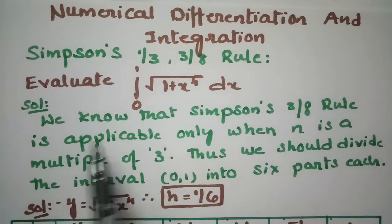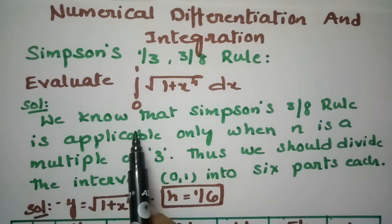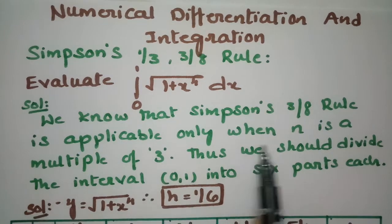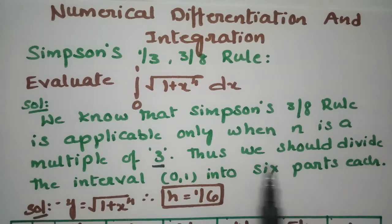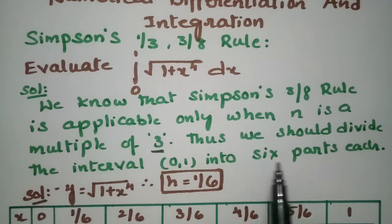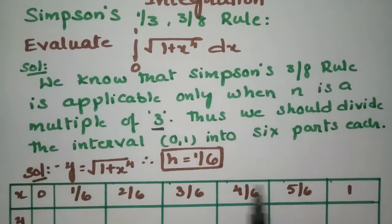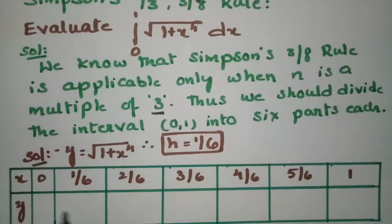The h value is unknown here. We know that Simpson's 3/8 rule is applicable only when n is a multiple of 3. Thus, we should divide the interval into 6 equal parts. So here, h = 1/6.